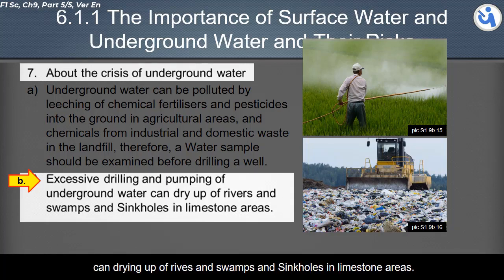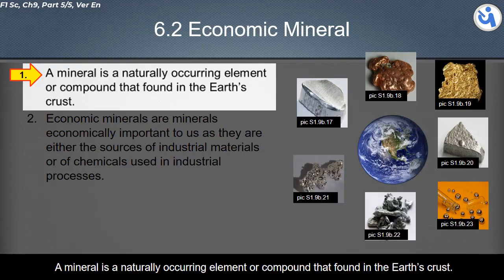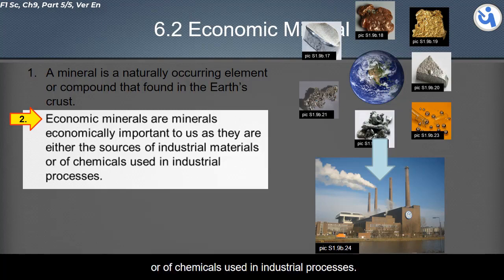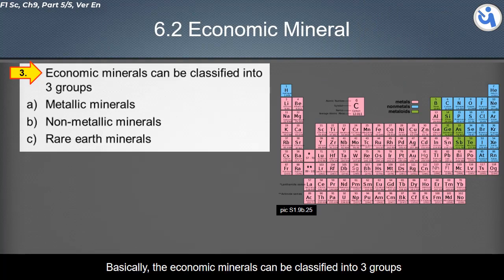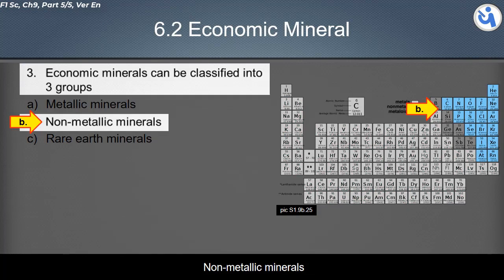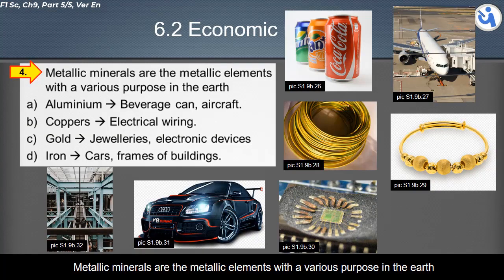Now we continue our lesson with the topic of economic minerals. A mineral is a naturally occurring element or compound found in the earth's crust. Economic minerals are minerals economically important to us, as they are either sources of industrial materials or chemicals used in industrial processes. Economic minerals can be classified into three groups: metallic minerals, non-metallic minerals, and rare earth minerals.